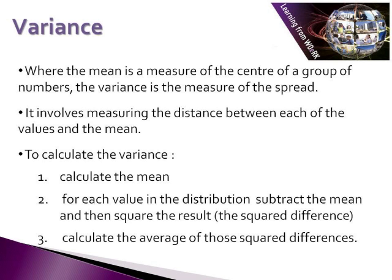The variance is our second measure of dispersion. Variance measures the spread of our distribution — where we take the mean as the centre point, variance measures how varied or spread the data is from the mean. It measures the distance between each value and the mean, i.e. how far away from the average each value lies. To calculate the variance, we start by calculating our mean: we add up all values and divide by the number of values present. Then for each value, we subtract the mean and square the result, giving us what we call the squared difference.